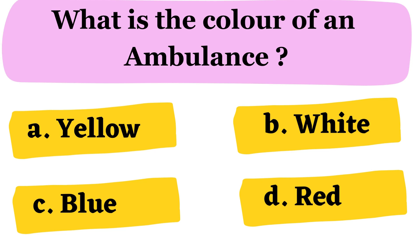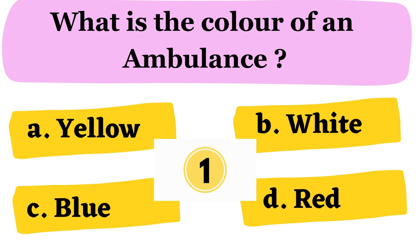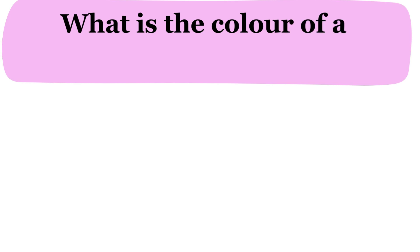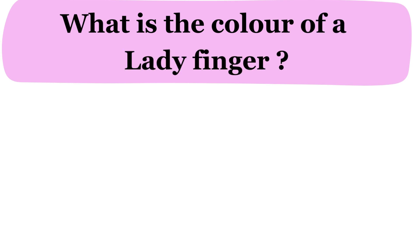What is the color of an ambulance? A. Yellow B. White C. Blue D. Red. The correct answer is option B. White.